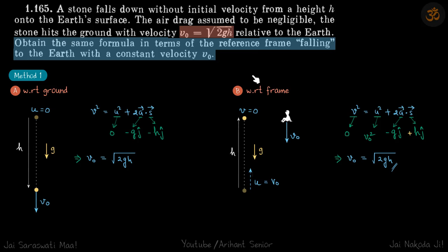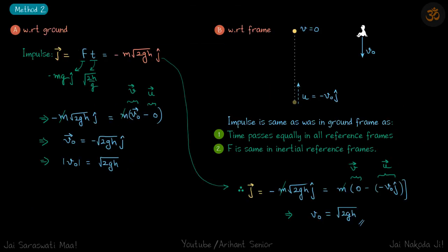Now let's do it with impulse. With respect to ground there is a force on the particle which is mg. So let's write impulse J = force into time. Force is downwards mg so we can write it as -mg into ĵ cap.